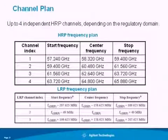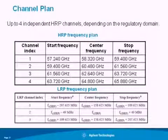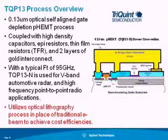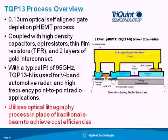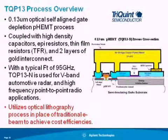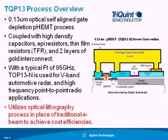Within the channel plan, most of the channels are right around the 60 GHz range for the high data rate. We have some lower data rate options, but we're focused on the high data rate channels for this project. We chose the TriQuint TQP13 process. It has self-aligning gates, a very good F_T around 95 GHz, and it utilizes an optical lithography process that helps with cost efficiencies needed for commercial home-use production. It's a two-metal process with all integrated passives as well as devices within it.